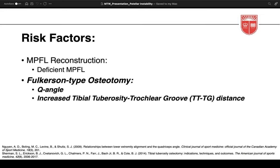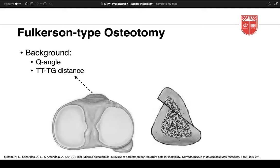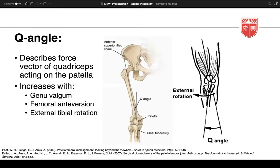Next, the Fulkerson osteotomy moves the tibial tubercle medially. Reviewing Q-angle: two lines — one from the patella through the tibial tuberosity and another through the patella to the ASIS — form the Q-angle, representing the quadriceps force vector. Normally the quadriceps pulls the patella proximally and slightly laterally. This can increase with genu valgum, femoral anteversion, or external tibial rotation — all conditions where the tibial tuberosity is relatively lateralized, creating an increased lateral force vector on the patella.